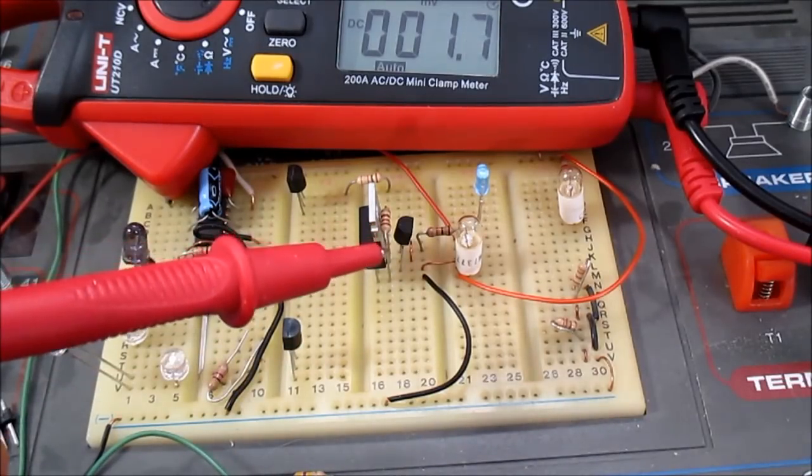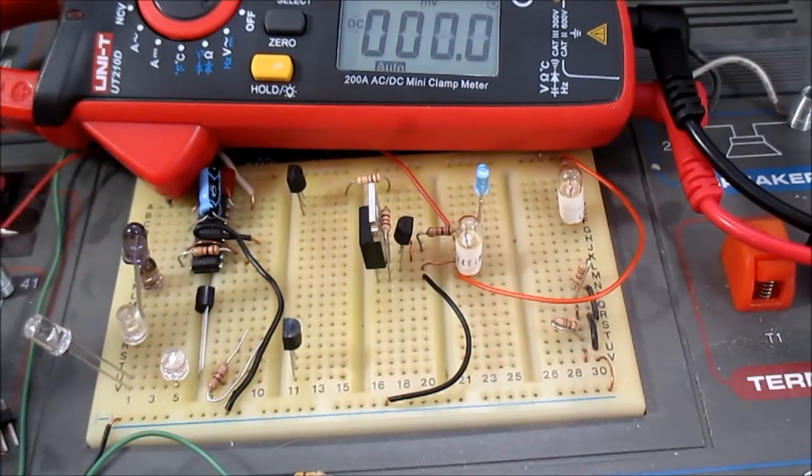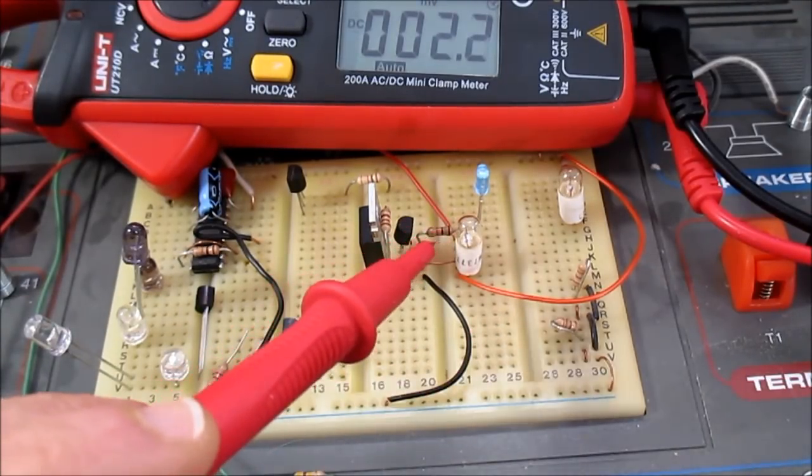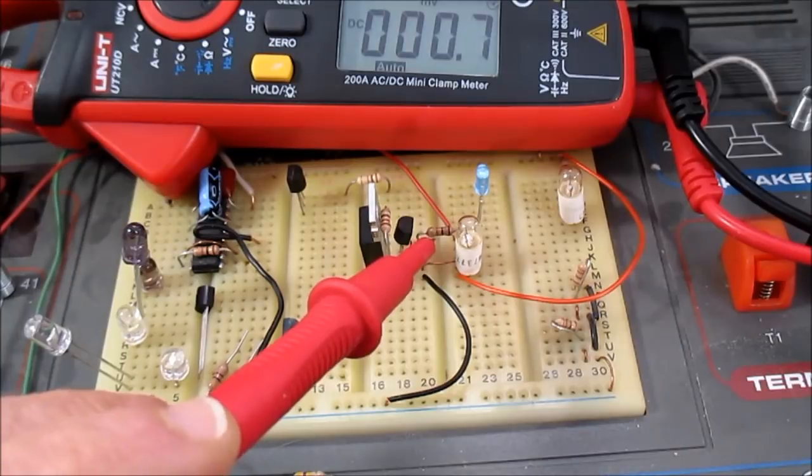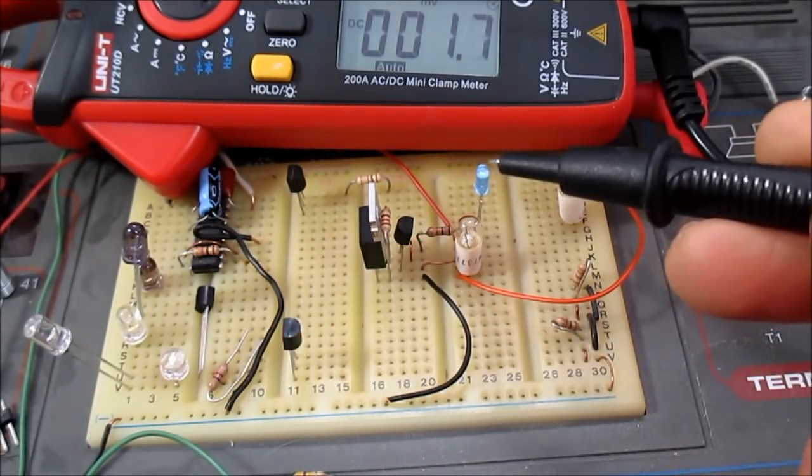I have a little Darlington circuit set up here. Ignore this other stuff around here, it's not part of the circuit. So I have a supply of about 9 volts, and the base resistor is this 10k. I also have a blue LED in series with that.